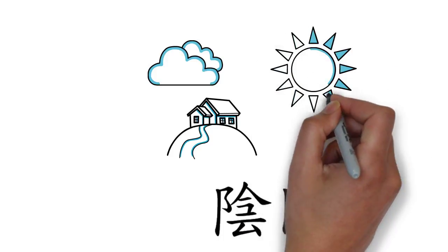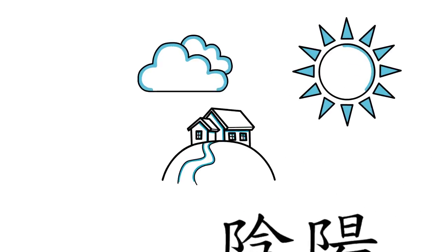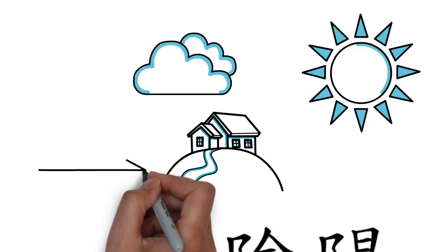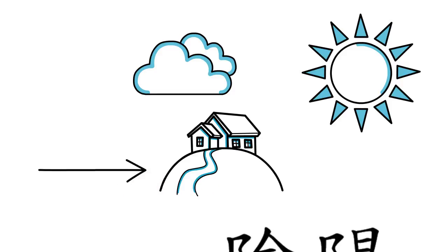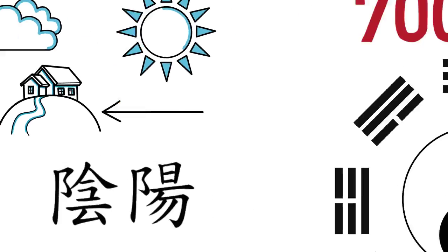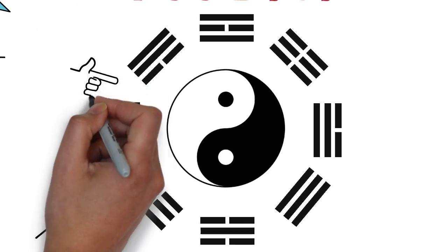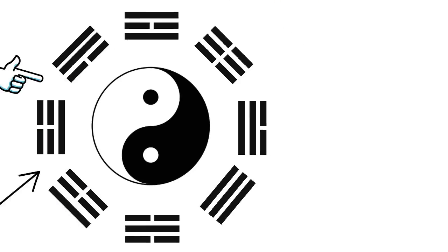Thus both characters combined represent the idea of a hill, with yin being the shady side and yang being the sunny side. And that's where the light and dark color in the symbol come from.